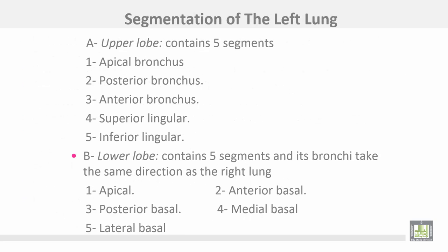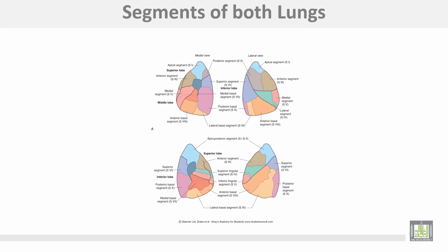Segmentation of the left lung: the upper lobe contains five segments — apical, posterior, anterior, superior, and inferior. The lower lobe also contains five segments with bronchi taking the same direction as the right lung: apical, then four basal — anterior, posterior, lateral, and medial basal. This figure shows the different segments of each lung, right and left.